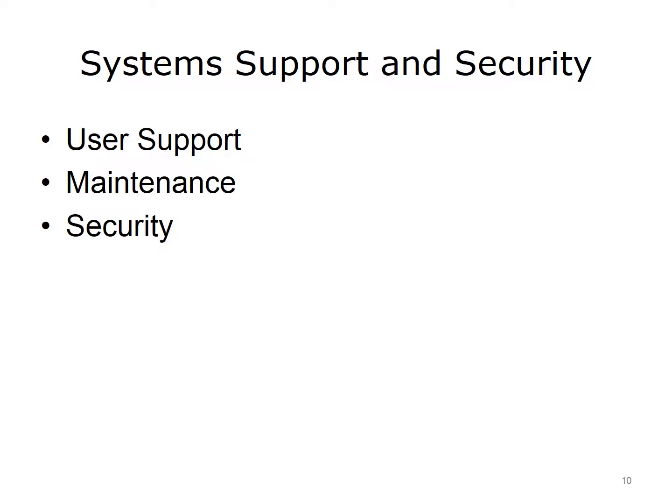The final stage of systems development is systems support and security. After the information system is deployed, there must be resources in place for supporting it over time and making sure that it is secure. User support helps system users perform the tasks they need to accomplish with the system. Maintenance refers to updating the system to address any errors or problems that arise and to add new features. Finally, security ensures that the system is properly protected.